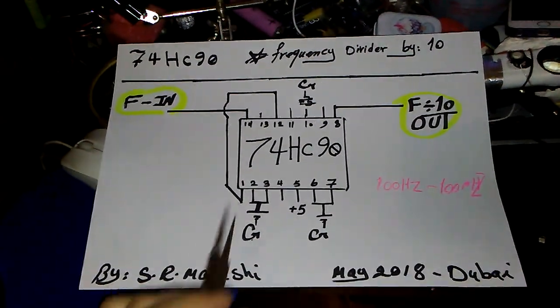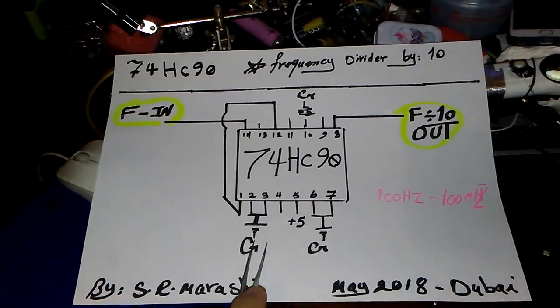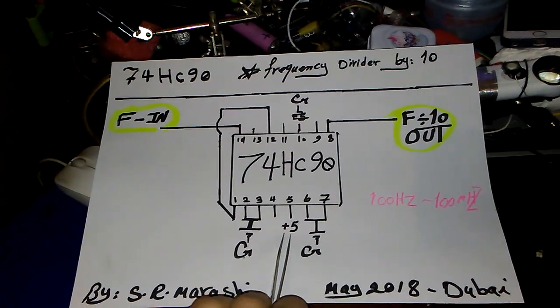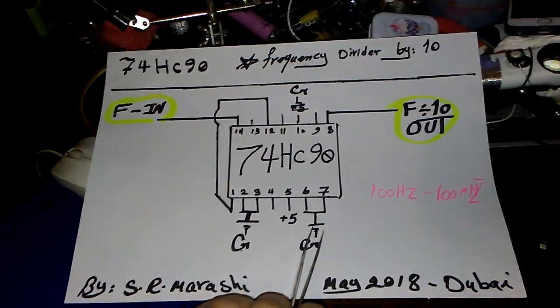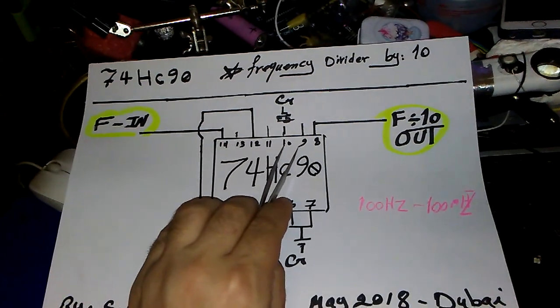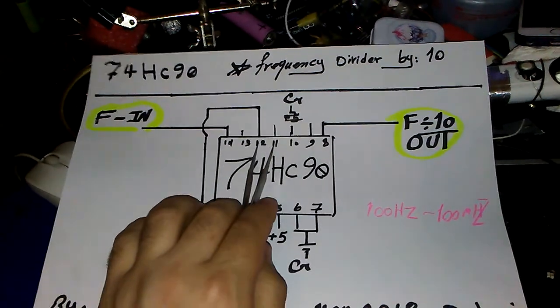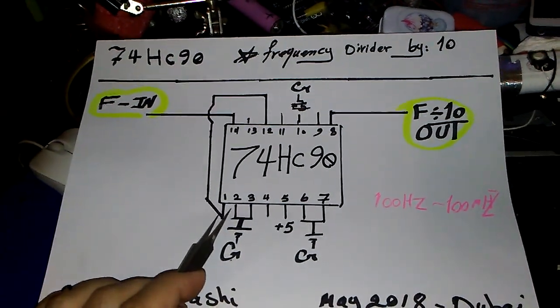Pin number 2 and 3 should connect to the ground. Pin number 5 is positive 5 volts. 6 and 7 ground, and finally pin number 10 also ground. Pin number 12 and pin number 1 should connect to each other.